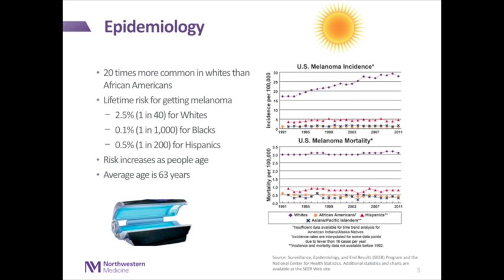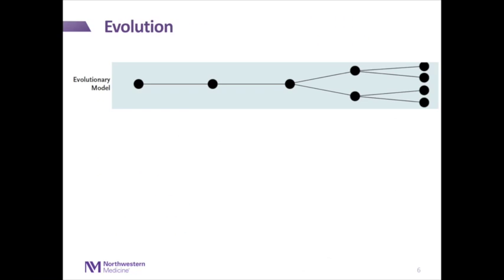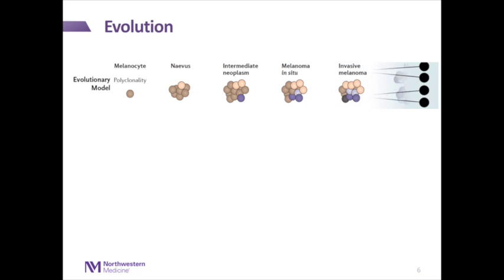There are many risk factors for melanoma, but one of the big ones is sun exposure and tanning bed use, which some of the other speakers will go into later. So how do melanomas arise? There is an evolutionary model that's been proposed, recently published in the New England Journal. We know that melanoma starts from a precursor — the cell that becomes abnormal is the melanocyte.